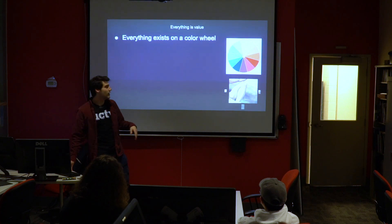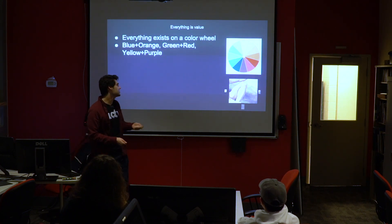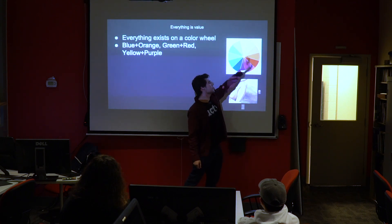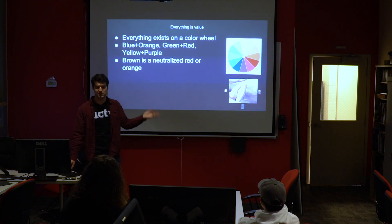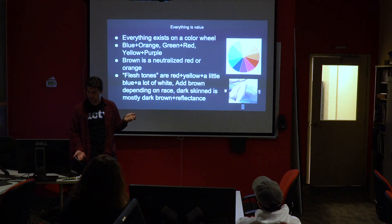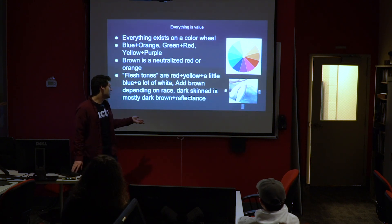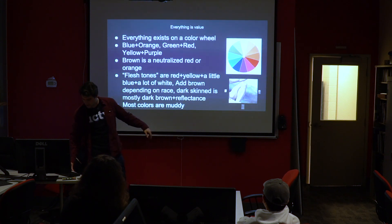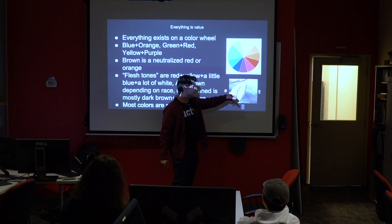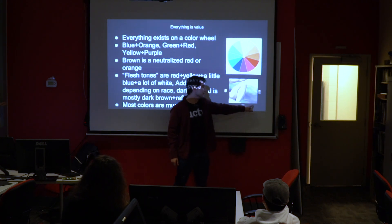This is color theory, extremely fast. Every color exists on an imaginary color wheel. There are color combinations that make the best attractive contrast — for instance, blue and orange, green and red, and purple and yellow. Brown is actually just a neutralized red, meaning it's red mixed with green — or it's orange mixed with blue. Flesh tones are kind of like red plus yellow plus a little bit of blue and a lot of white; you add brown depending on race. Really dark-skinned people usually have a lot of dark brown and then a lot of reflectance. Most colors are actually muddy — take this Michelangelo, for example: even though it seems super bright, this part is actually a dull white, this part is dull, and this is a dull brown. These colors look ugly when separated, but when together they seem to pop.